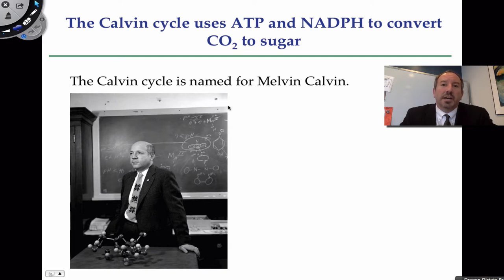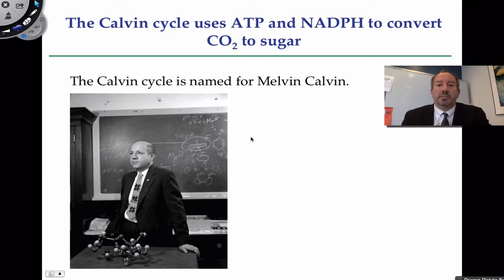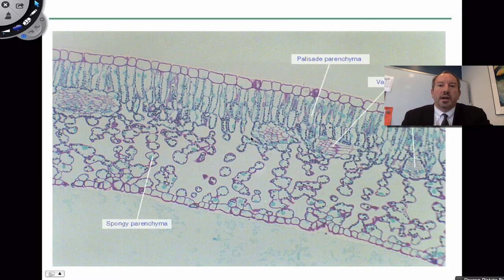Long story short, the Calvin cycle is going to use the energy of ATP — produced in the light reaction — and the reducing power of the reduced coenzyme NADPH. It's going to take those electrons and that energy to turn carbon dioxide into sugar. We'll start by looking at a C3 cross-section leaf anatomy.